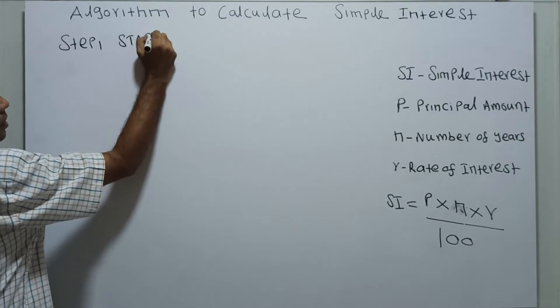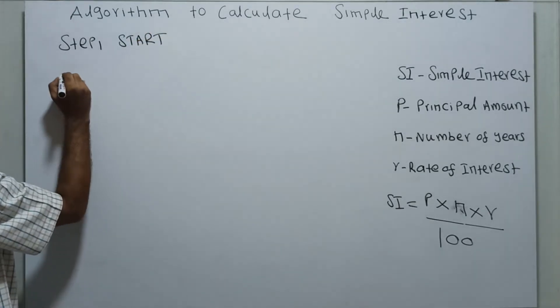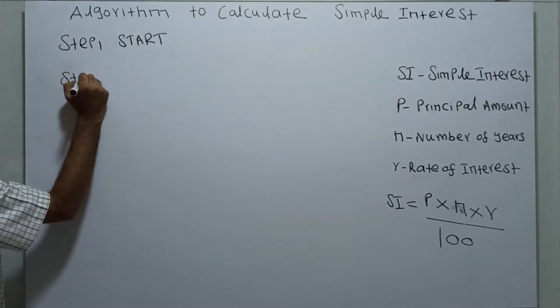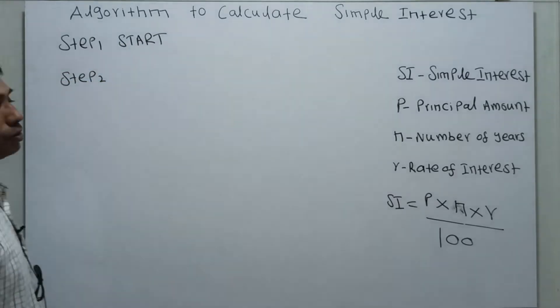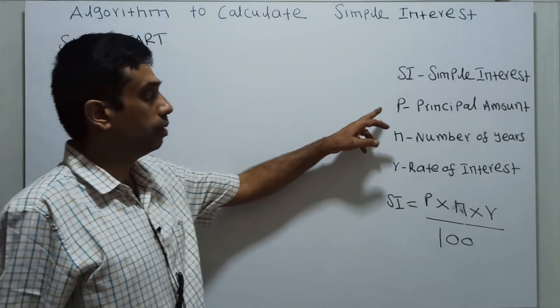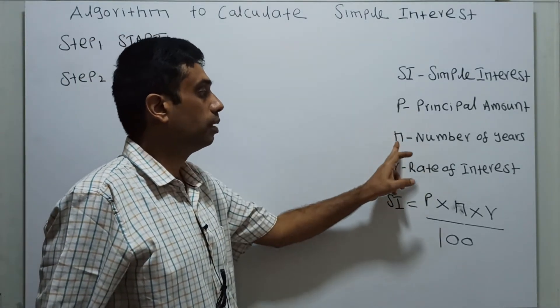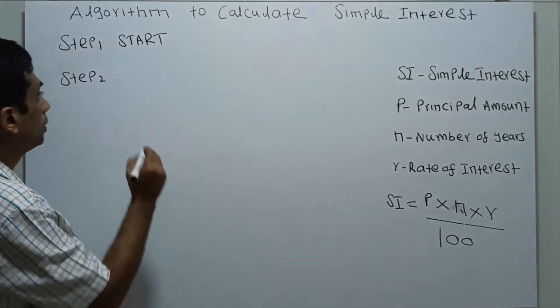Step 2: ask the user to enter the values for P, N and R — that is, principal amount, number of years, and rate of interest.